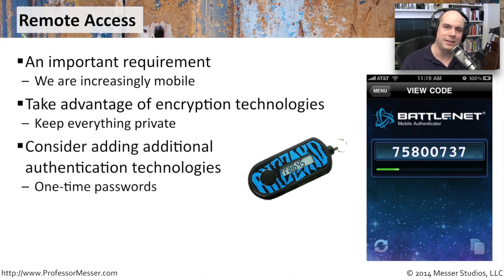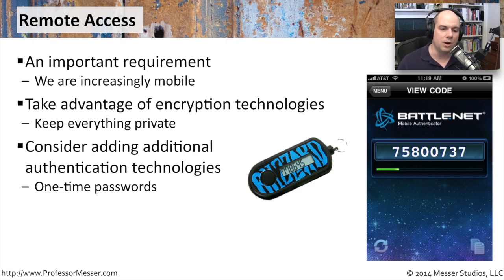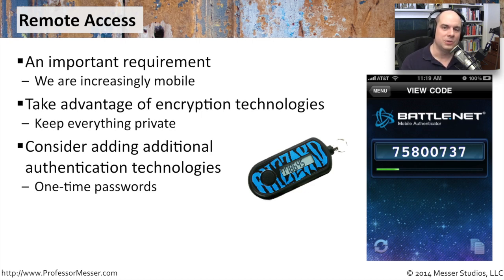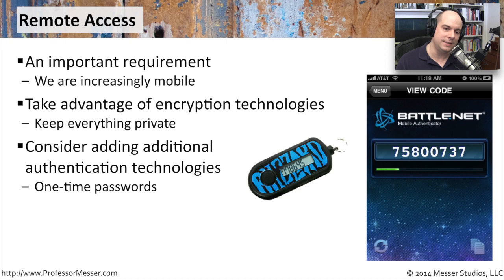You might also want to add additional technologies to provide additional authentication functions. For instance, you can have a token generator of some kind, whether a hardware token generator or one in software, that's constantly providing pseudo-random numbers to you. So not only do you have to put in your username and your password, but you also have to put in some other piece of information — usually based on something that you have with you, like a token generator. You now have to type in username, password, and a code like 778-645 and hit Enter.